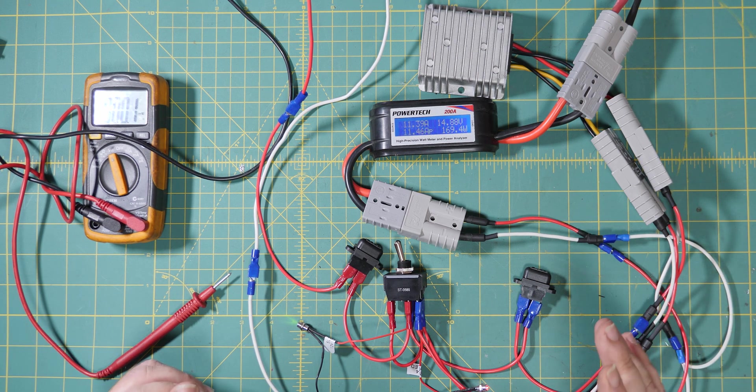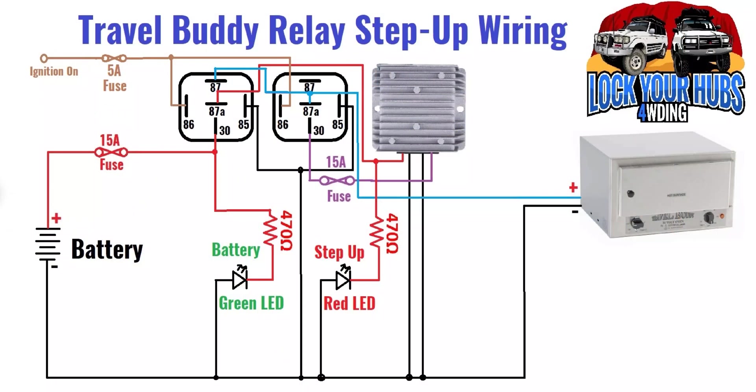Now onto the next circuit using relays and the accessory wire from your ignition. Here we have the Travel Buddy relay step-up wiring. The difference is instead of a switch we have two single pole double throw relays. I've used those because they're common, reliable, and easy to get. Just as before, we've got battery power coming in, illuminating the green LED. Now we have to switch on the relays by providing earth through the negative and providing our switch to pin 86 on both relays. When illuminated and providing power to the step-up converter, the red LED illuminates. When it doesn't, it bypasses and goes straight through to the Travel Buddy.